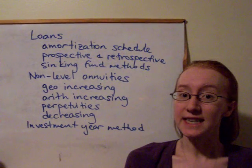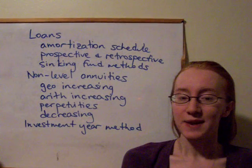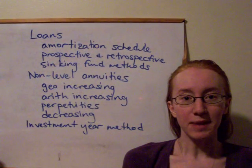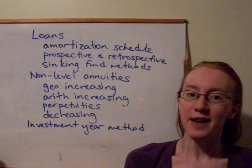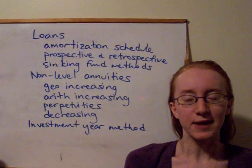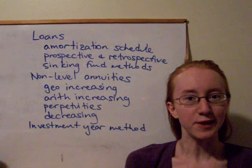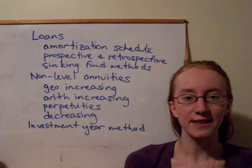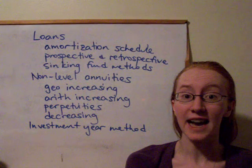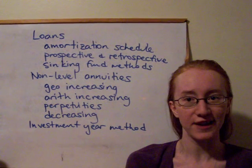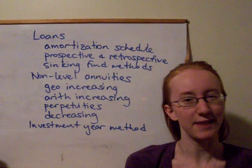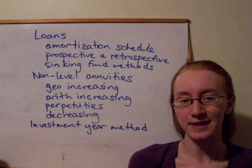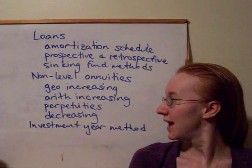We can even look at decreasing annuities, where the first payment starts off at n dollars, the second payment is n−1, then n−2, etc., until the very end when the last payment is $1. We never assume that the payments go negative — we assume they stop when they get to zero dollars.